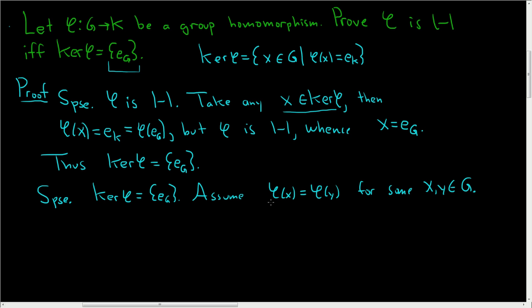So the natural thing to do is to rewrite this equation. You can multiply on the right by φ(y⁻¹), so you can write this as φ(x)φ(y⁻¹) equals the identity element in K.